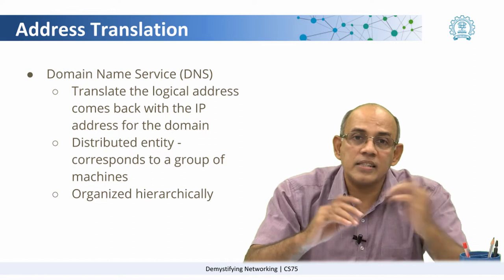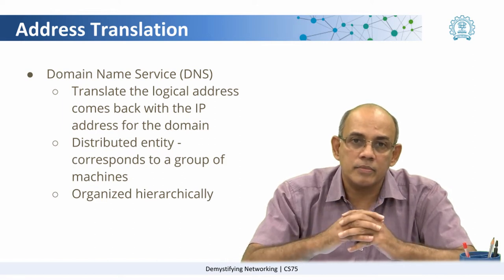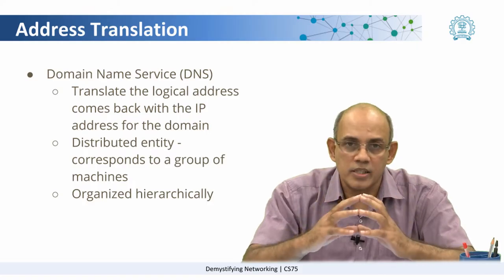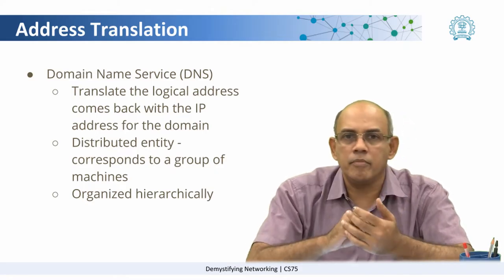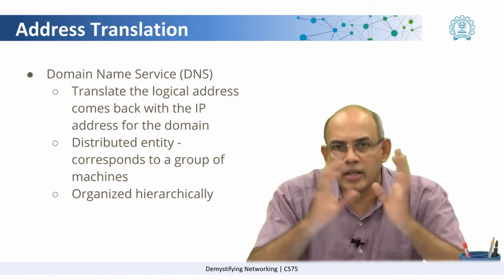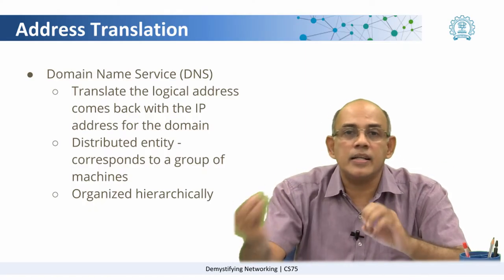While we have seen this idea of IP addresses at a conceptual level, there are a lot of intricacies which are important in order for the internet to function. At one level, there is the idea of being able to translate one address into another. We saw that there were three levels of addresses: MAC addresses, IP addresses, and logical addresses. So who translates a logical address into an IP address? That is called the domain name service — a server whose job is simply, given a domain name such as www.iitbombay.ac.in, to come back with the IP address for that domain.